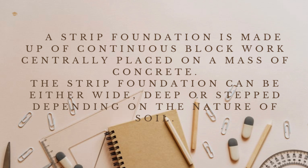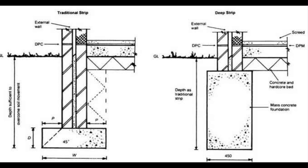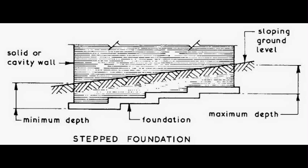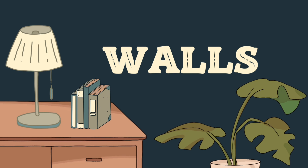A strip foundation is made up of continuous blockwork centrally placed on a mass of concrete. The strip foundation can be either wide, deep, or stepped depending on the nature of soil. The wide and deep strip foundation, as seen in the section, is used when the load-bearing capacity of the soil is weak — they help to transmit the load over a large area of soil. However, the stepped strip foundation is used in undulating terrains where the site is not level.